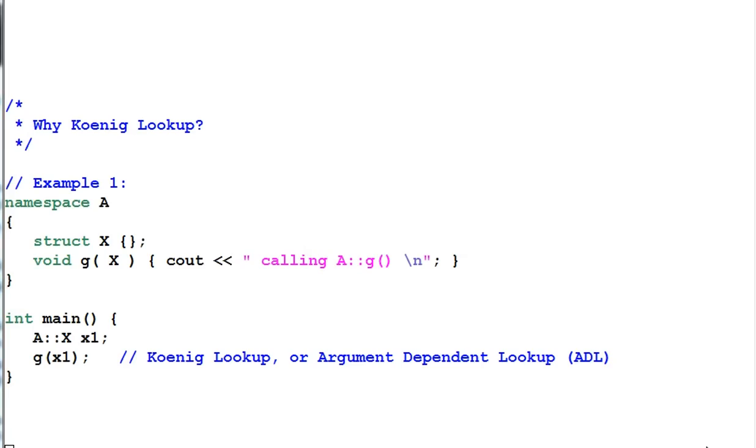Hello, everyone. Last time we talked about Koenig lookup. Koenig lookup is for the purpose of function name search.